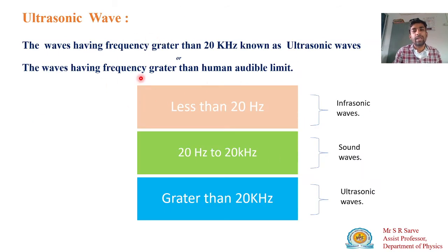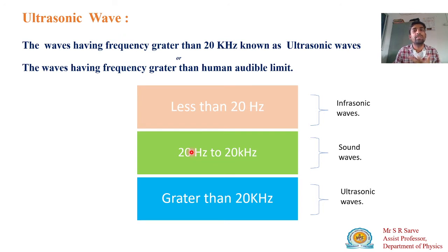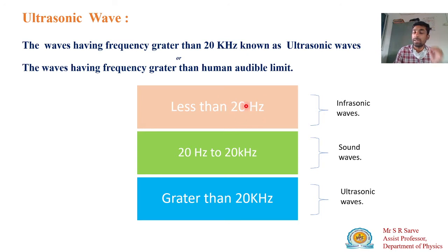An ultrasonic wave means a wave which has a frequency greater than 20 kilohertz. Generally, human ears are audible to the frequency range of 20 hertz to 20 kilohertz — that means we can hear frequencies from 20 hertz to 20 kilohertz, which is known as sound waves. So the sound I am speaking has frequency in that range, and that is your audible sound.